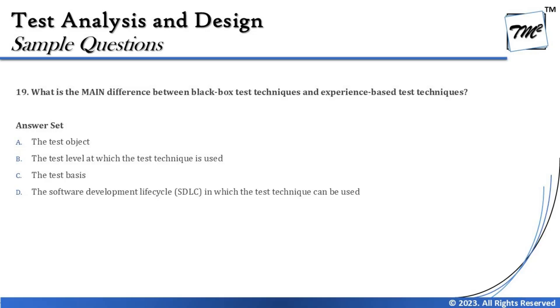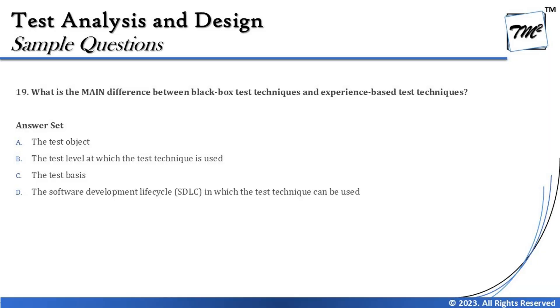Option D says the software development life cycle in which the test technique can be used. Test techniques are not relevant to a particular SDLC — they are open to all. I can use the same techniques in waterfall as well as agile methodology, so there are no restrictions. That also goes invalid. So the right answer for question 19 is C — the test basis plays a vital role in differentiating between black box and experience-based test techniques. You may have theoretical questions coming from topic 4.1. Let's move on.